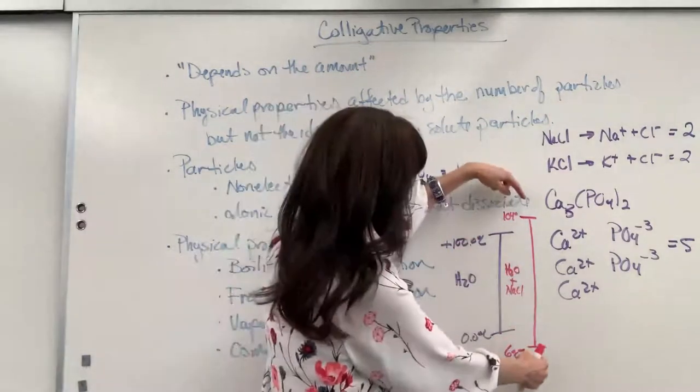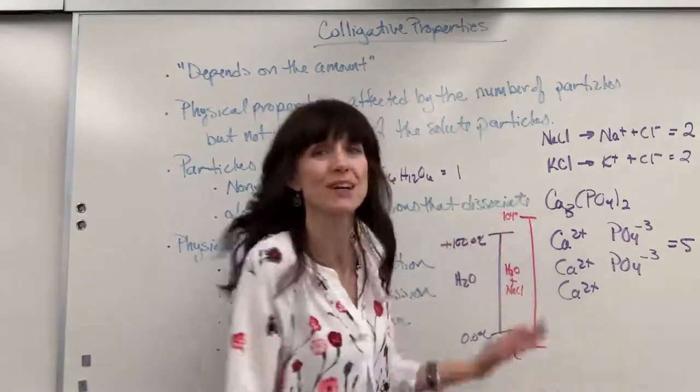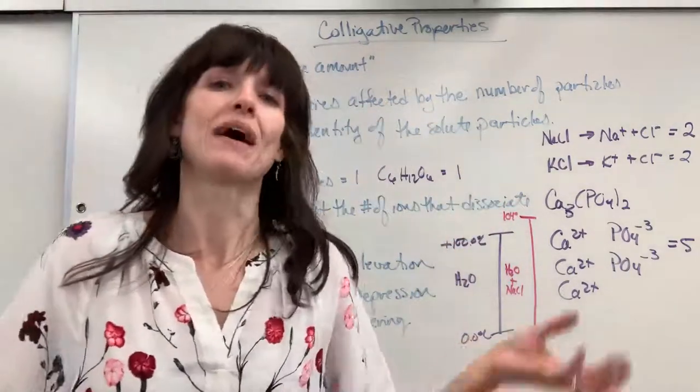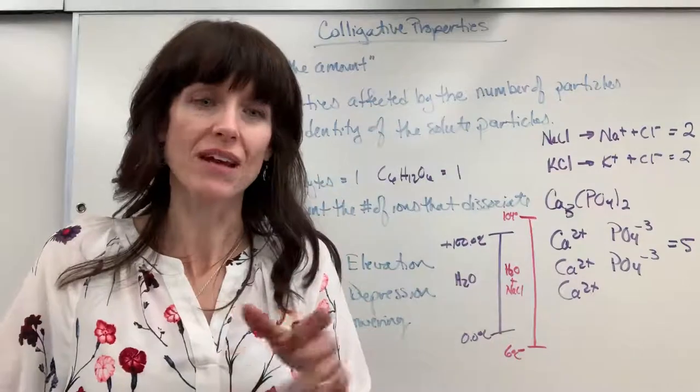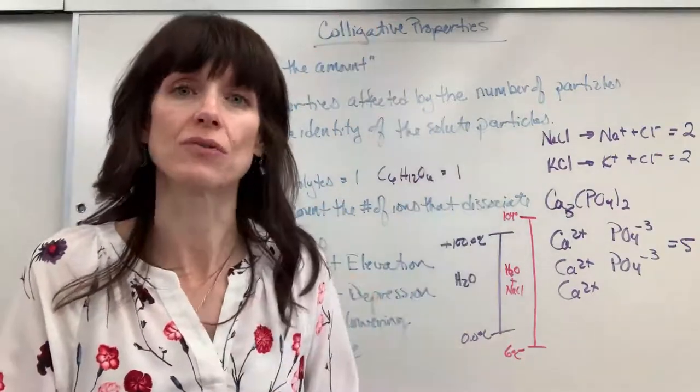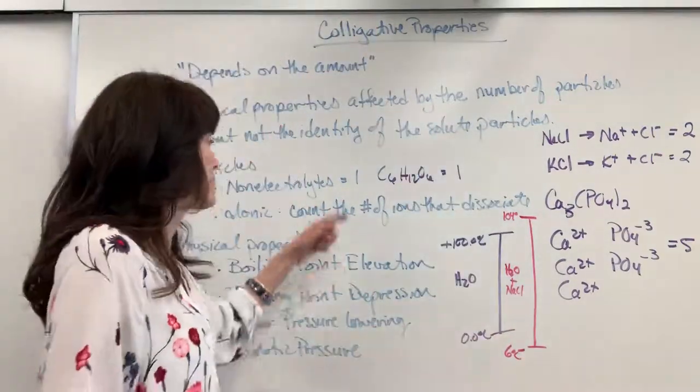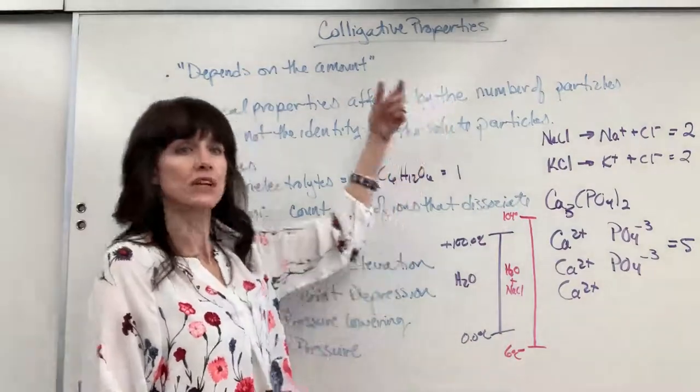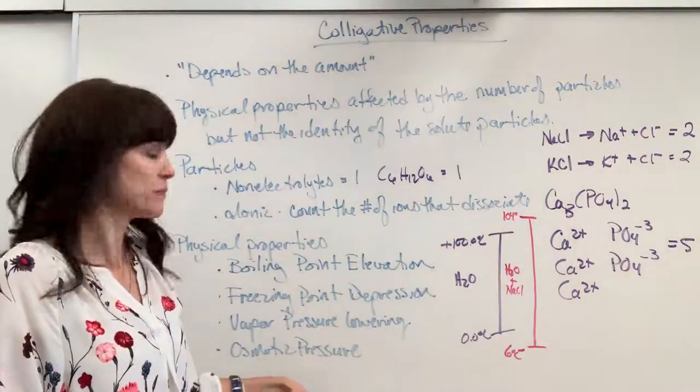And it might freeze now at like a minus 6 degrees C. So notice the range, instead of being a range of 100, the range is now 110. So by adding the solute to the solvent, we stretch the range so that it stays in the liquid phase. And that's how you can remember boiling point goes up, freezing point goes down.